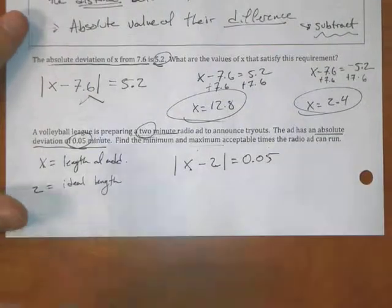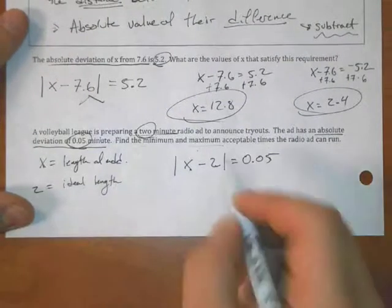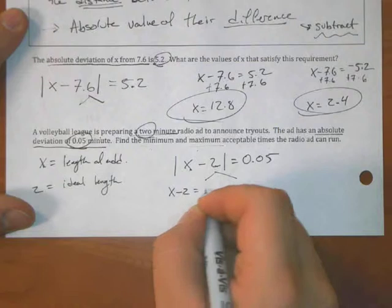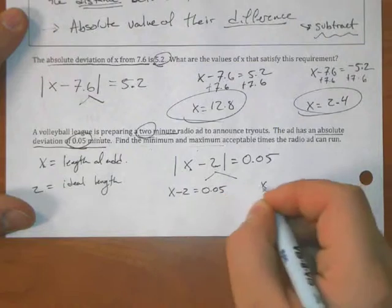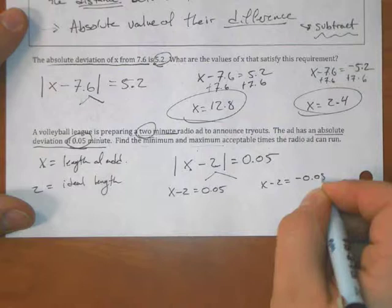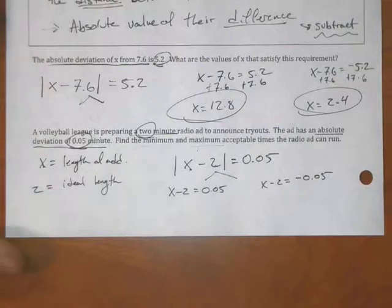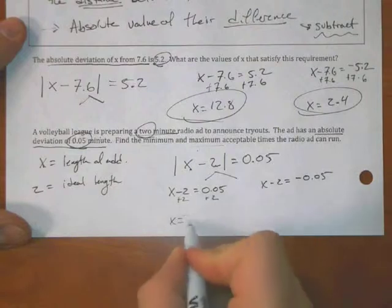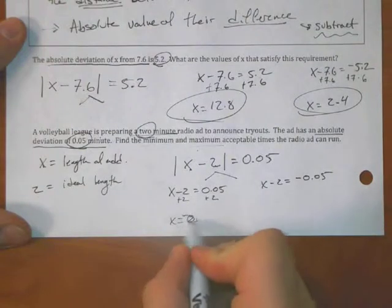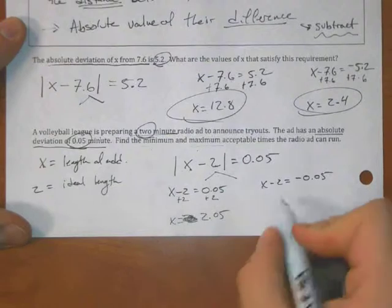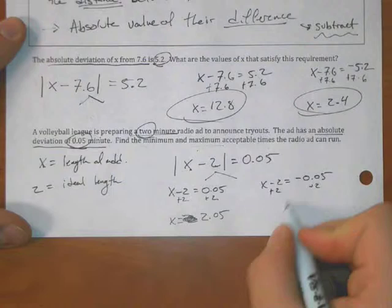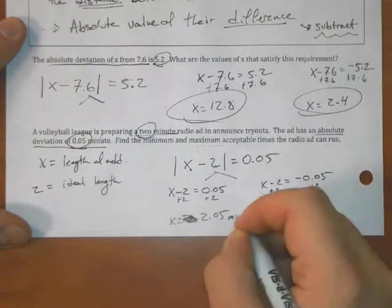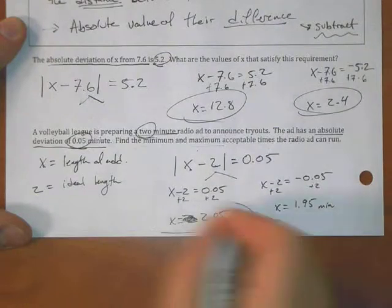Well, this absolute value equation I got from the absolute deviation of the thing up here, well this should let me figure out each of those things. So if I solve this, you get two equations. x minus 2 equals 0.05, or x minus 2 equals negative 0.05. If I solve this, then I get x is equal to 2.05, or x is equal to 1.95 minutes.